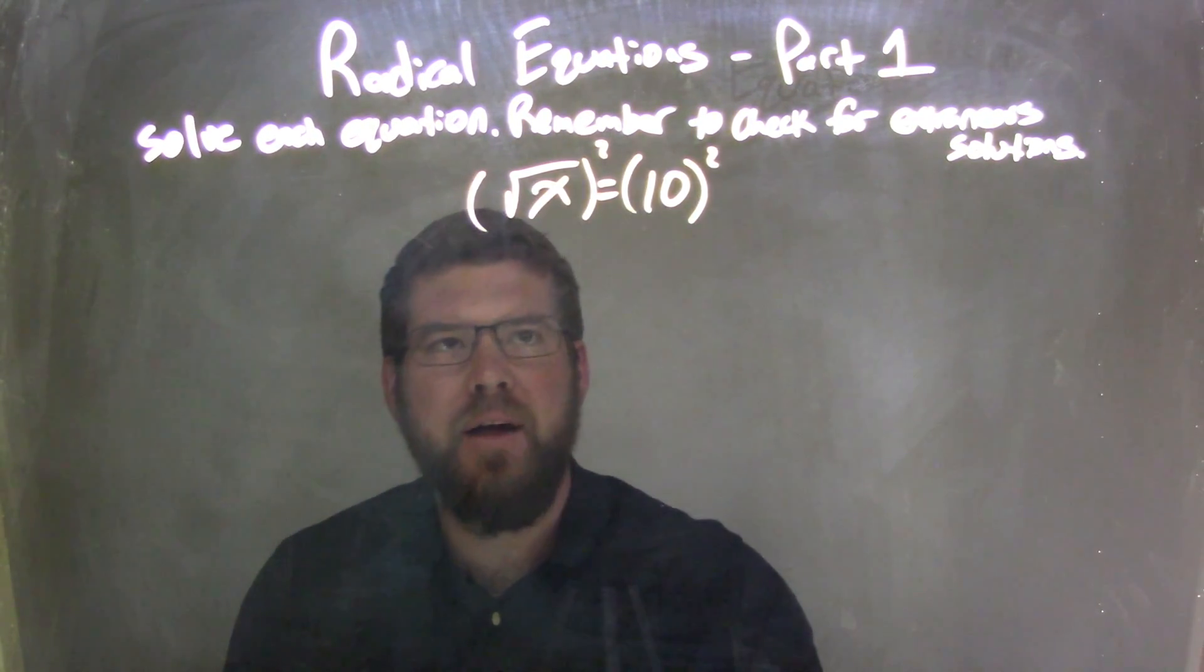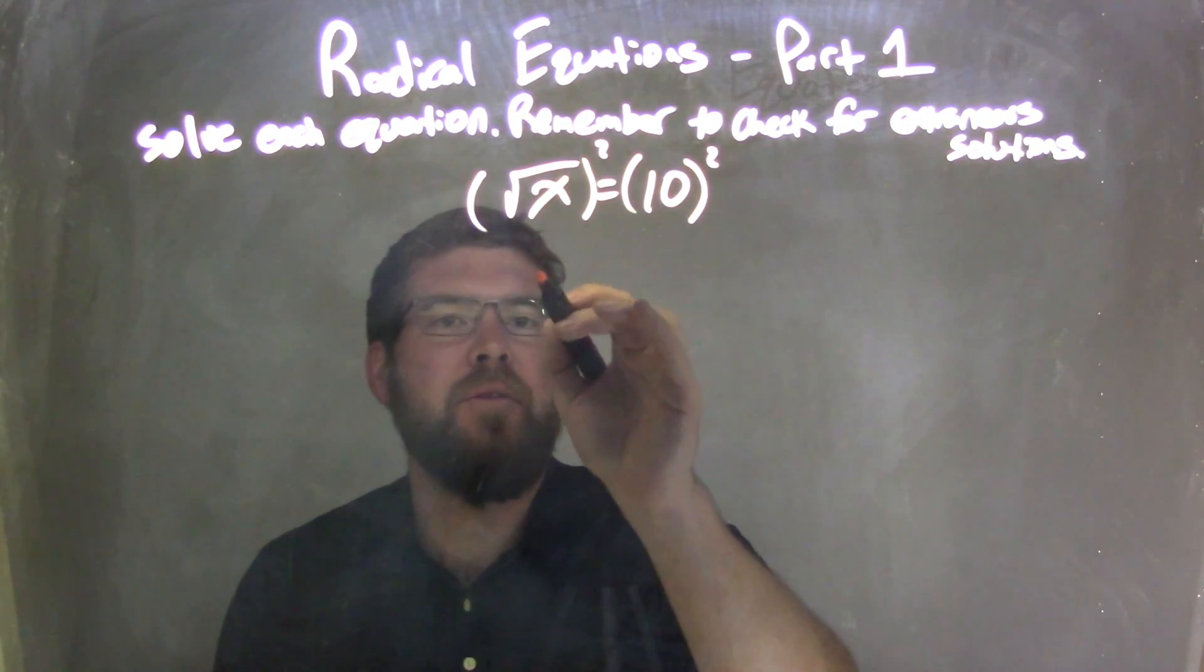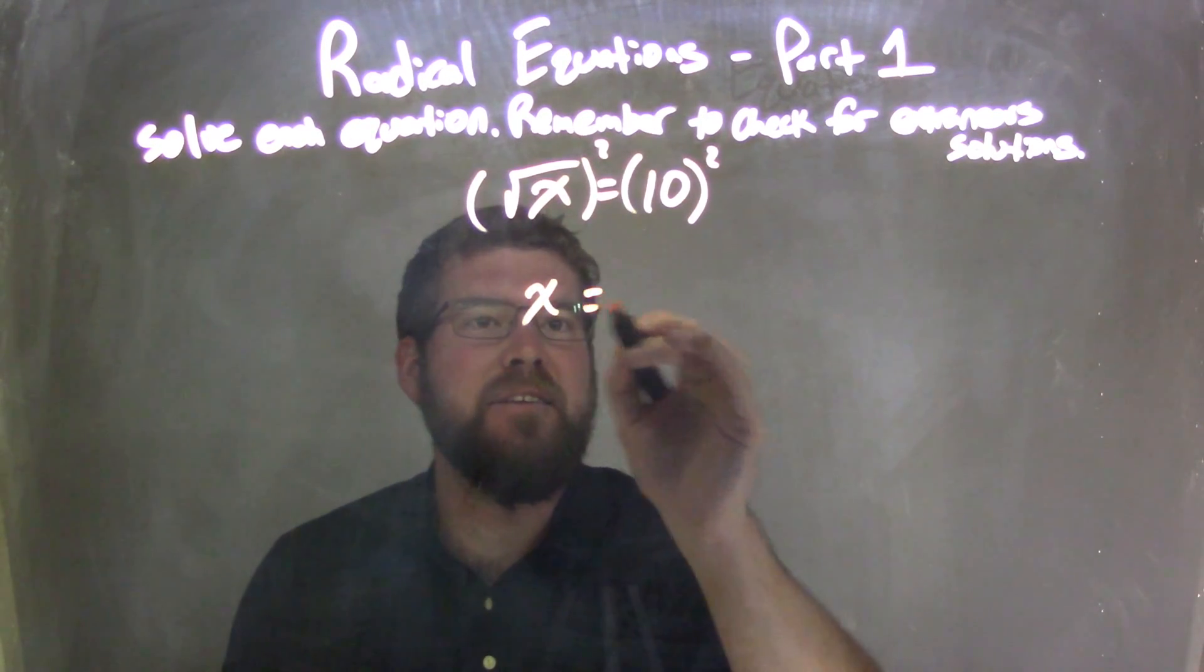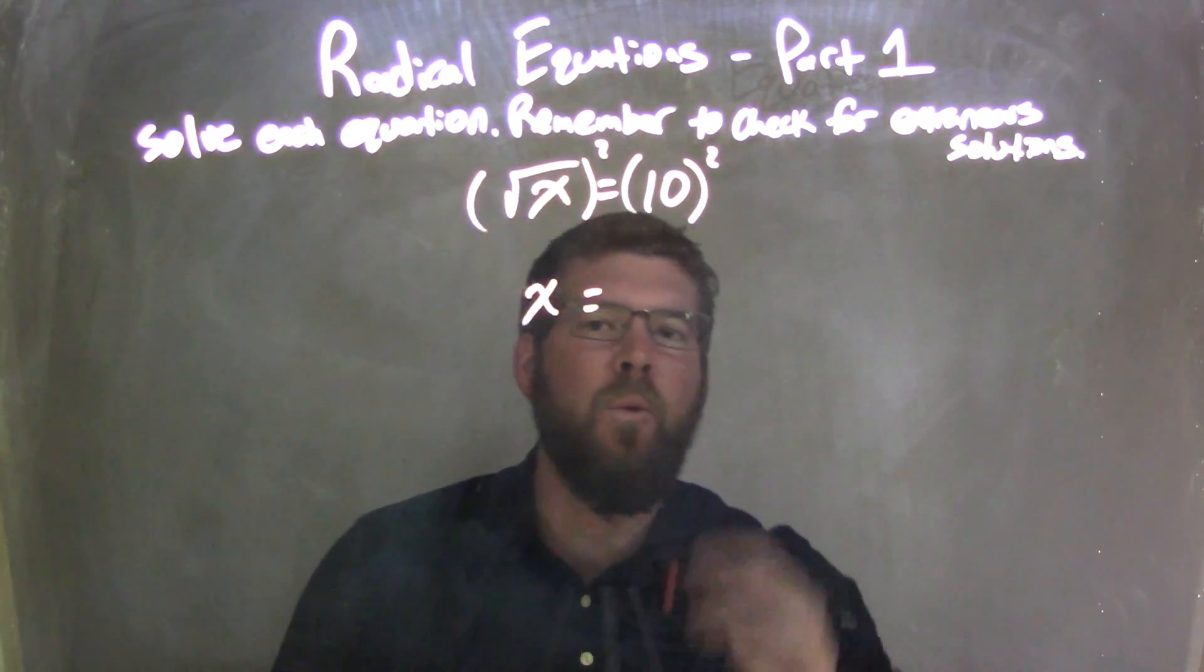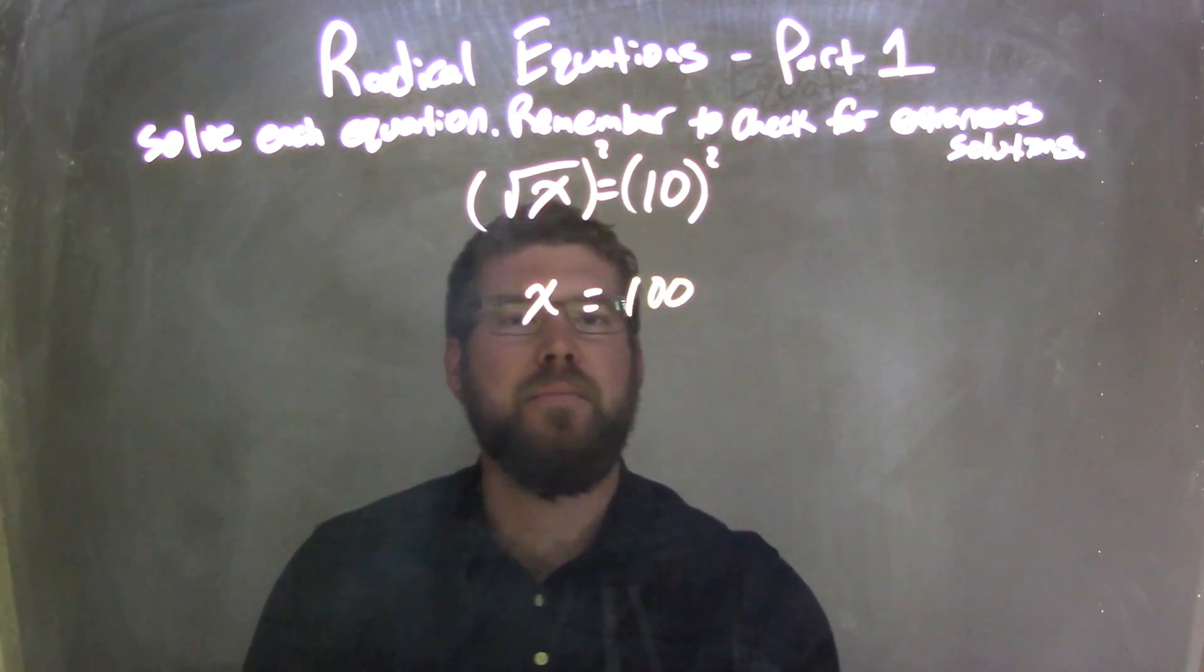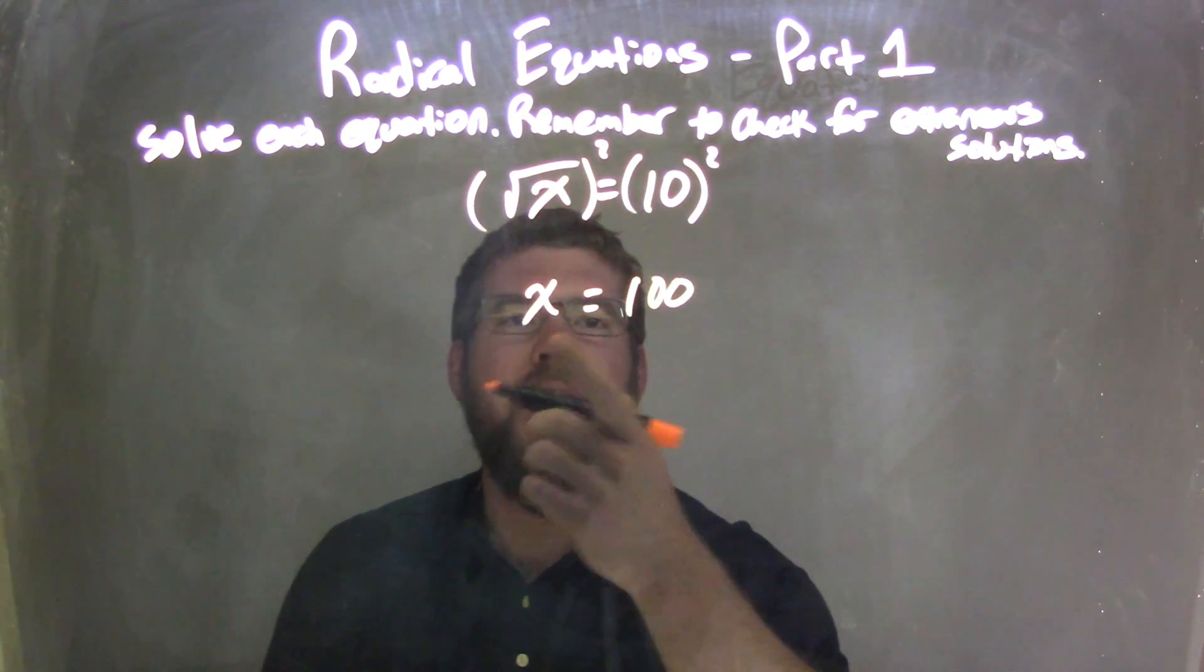By squaring both sides of the equation, we're left with just an x here, and then 10 squared being 100. So, we have an answer of x equals 100.